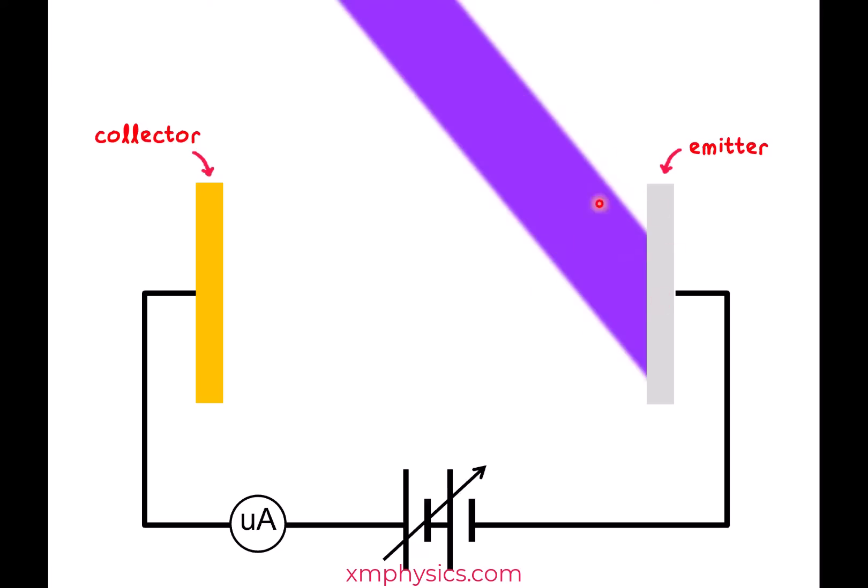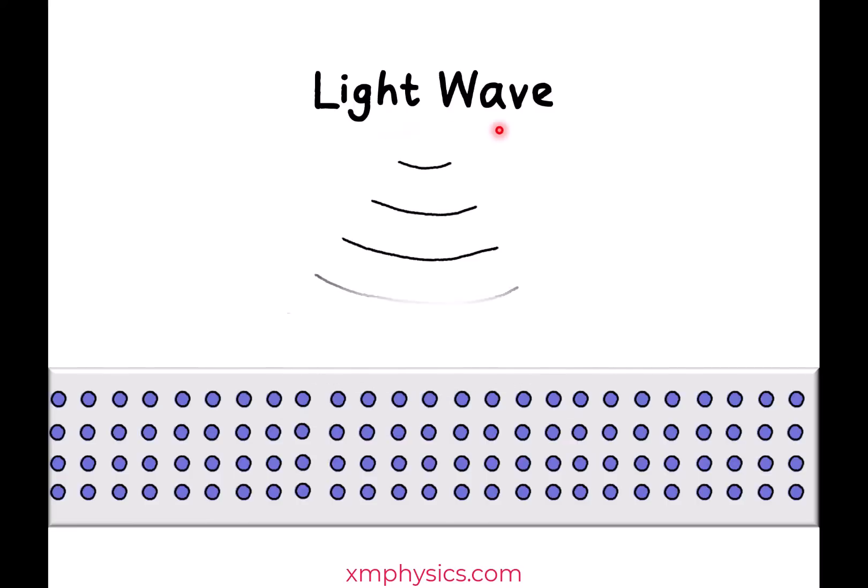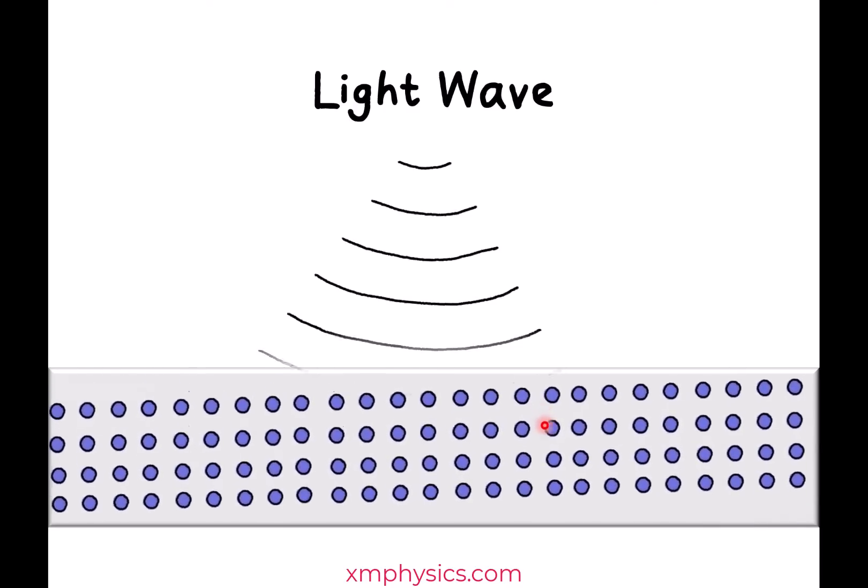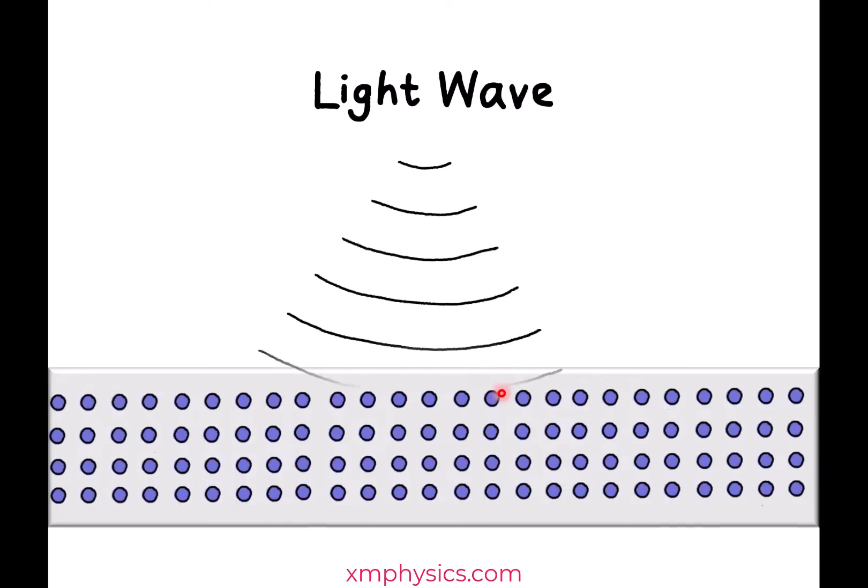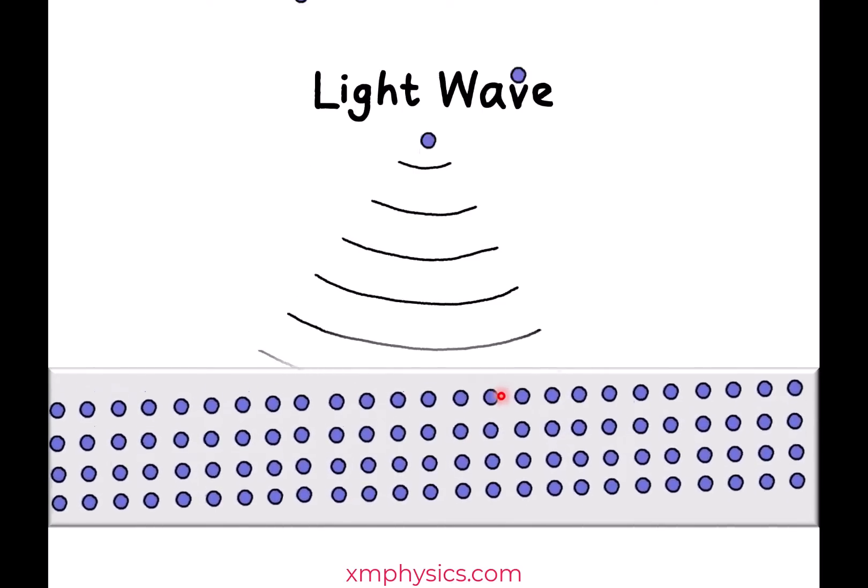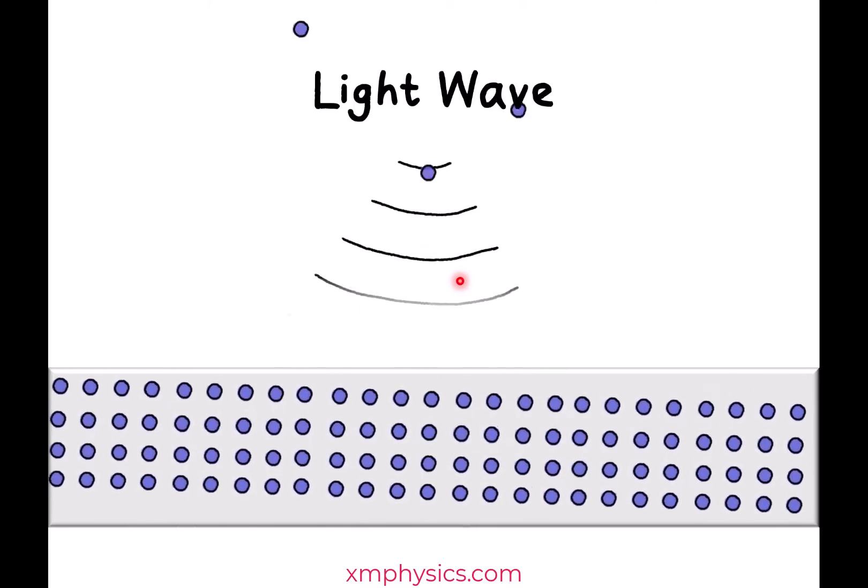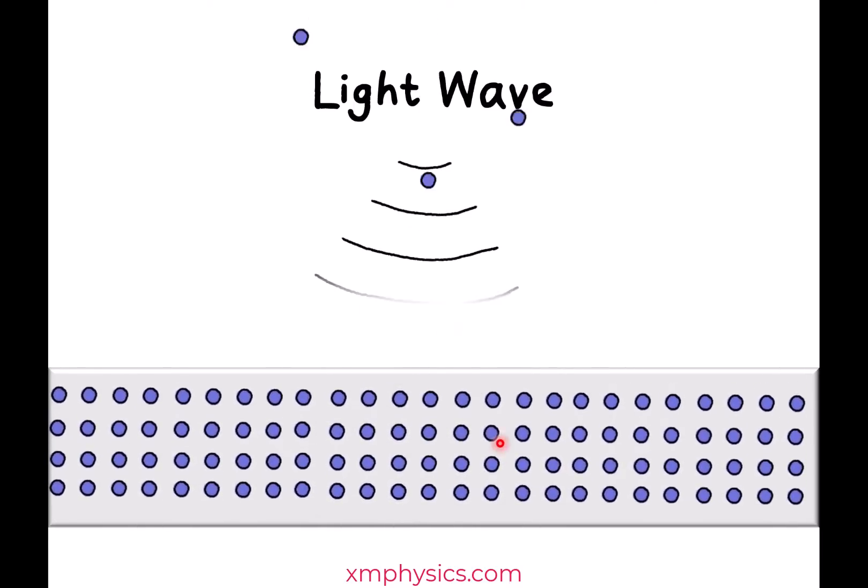Now the obvious thing to do is to vary the intensity of the light beam and see how the rate of emission and the speed of emission is affected by how bright or how dim this beam of light is. Now let's think about it. So if light is really a wave, then the light energy from the light beam would be shared by all these electrons. So over time, the average KE increase and increase and increase until eventually they are so energetic that they can break free from the metal lattice. So what happens if this light wave has a higher intensity? Higher intensity means energy is being transferred to the electrons at a higher rate.